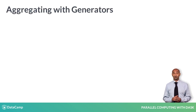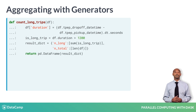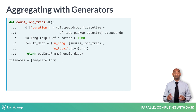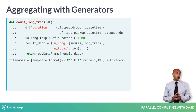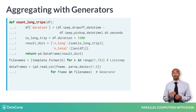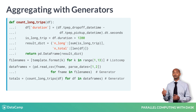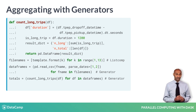With the function countLongTrips in place, we can organize our work into a pipeline using generators. We recreate file names, this time as a list comprehension — it's just a list of 12 strings, so a generator is not required. We create a generator data frames to load the files listed in file names one by one. We create another generator, totals, that applies countLongTrips to each data frame from data frames.